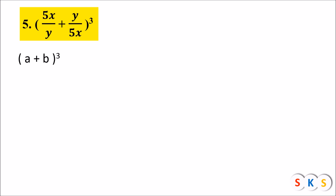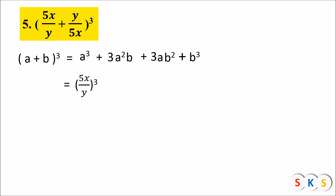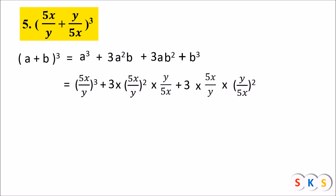We use the formula (a + b)³ = a³ + 3a²b + 3ab² + b³. Here a = 5x/y and b = y/5x. Substituting: (5x/y)³ + 3 × (5x/y)² × (y/5x) + 3 × (5x/y) × (y/5x)² + (y/5x)³.